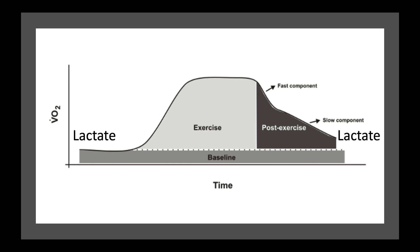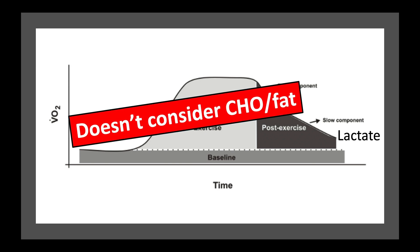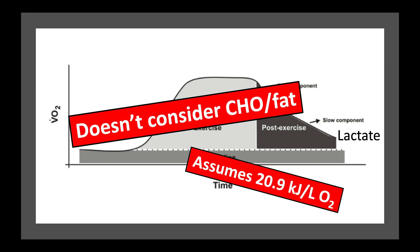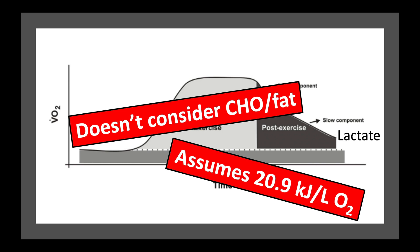However, this approach doesn't consider the substrate, so like fat or carbohydrate, used for energy production, or differences in efficiency with each substrate. People have typically used a set value of 20.9 kilojoules per liter of oxygen, but as we'll see, this is actually dependent on the fuel source being burned.